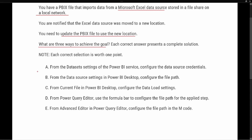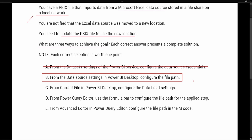Option A says: 'From dataset settings in the Power BI service, configure the data source credentials.' Since we're on a local network, we're accessing data from the desktop — not inside the service — so we can eliminate Option A. Data source credentials just let you log in; they don't configure the file path. Option B says: 'From the data source settings in the Power BI desktop, configure the file path.' That is definitely an option — we saw that first in the example, using the Transform Data drop-down and choosing Data Source Settings.